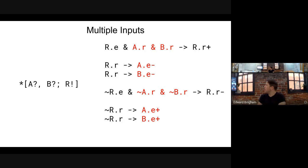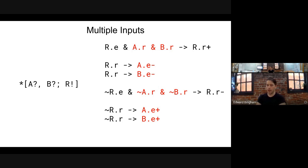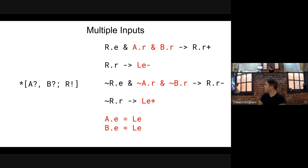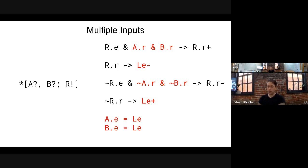The reset phase is symmetric: we wait for the output enable to lower and for both input requests to lower before lowering the output request. Then we wait for the output request to lower before raising both enables. This is the base case, but if this is all you're doing, we don't actually need two copies of that inverter for enable. Instead, we make a wire fork on A.E and B.E and use a single inverter to drive that wire fork, creating an internal node called LE with aliases at the bottom.